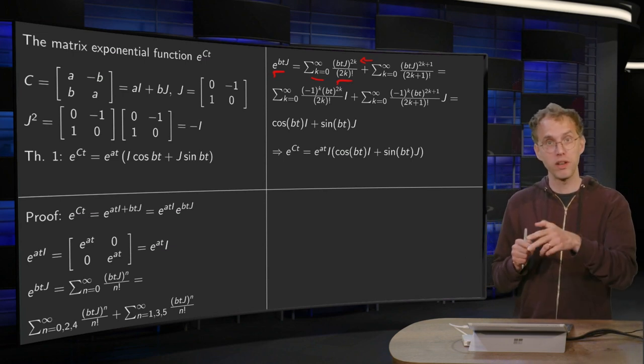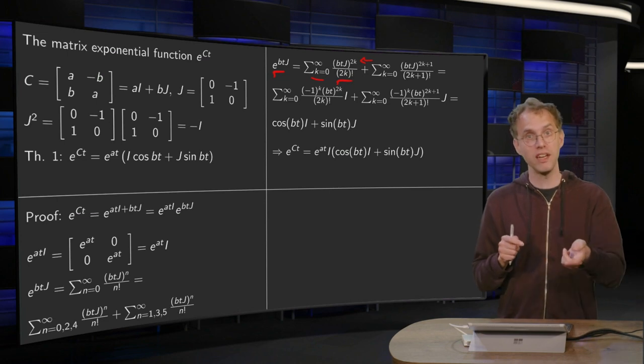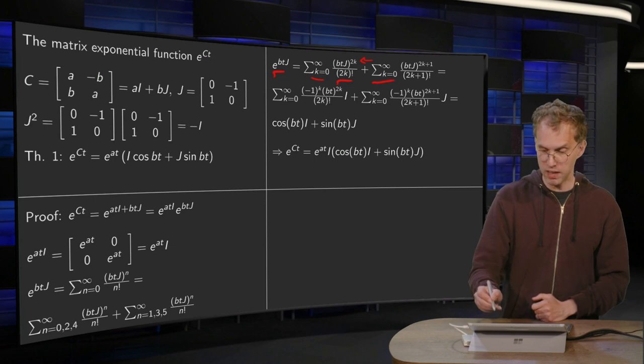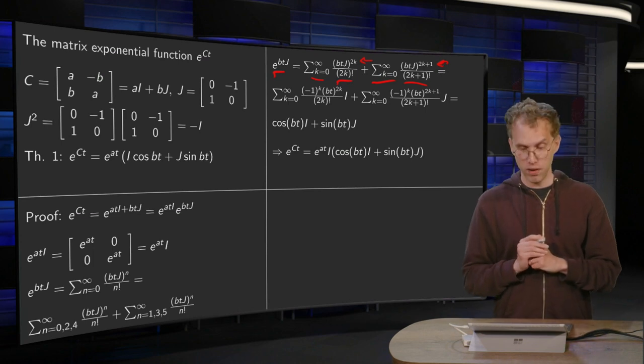For k equals 2, we get 5 and so on. So if k equals 0 to infinity, we have 2k plus 1 factorial and then 2k plus 1 over there as well.